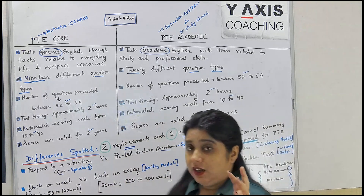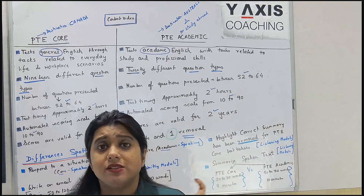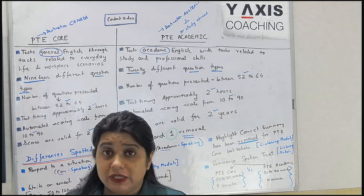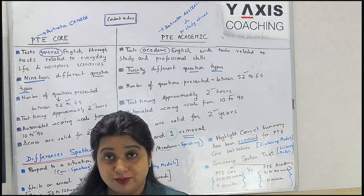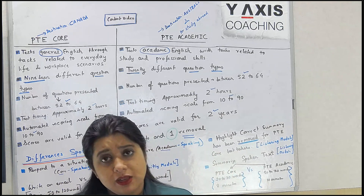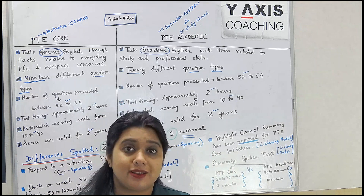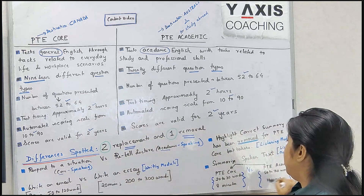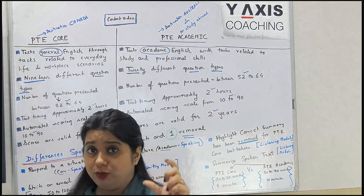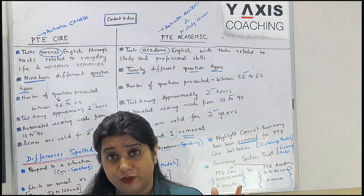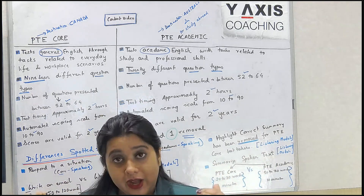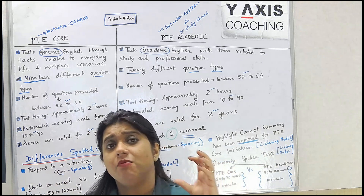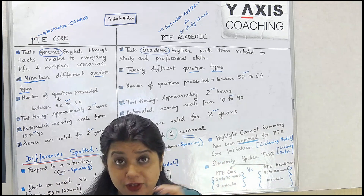One more thing that we have noted: 'summarize spoken text.' When writing PT Academic, you have a task type known as 'summarize spoken text,' which belongs to the listening module. Both PT Core and PT Academic test takers have to deal with this task type. For PT Academic, you have to listen to a lecture for one and a half to two minutes and take running notes while listening. Based on your notes, you have to write a summary with a minimum of 50 words and a maximum of 70 words. The time you get for everything is 10 minutes.